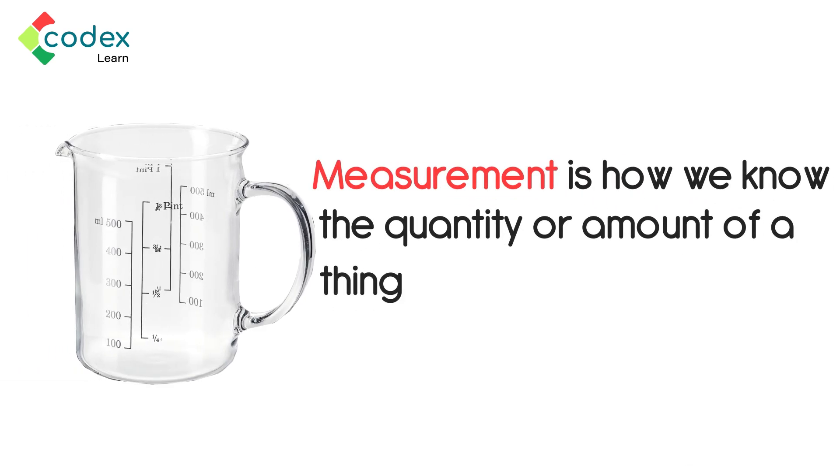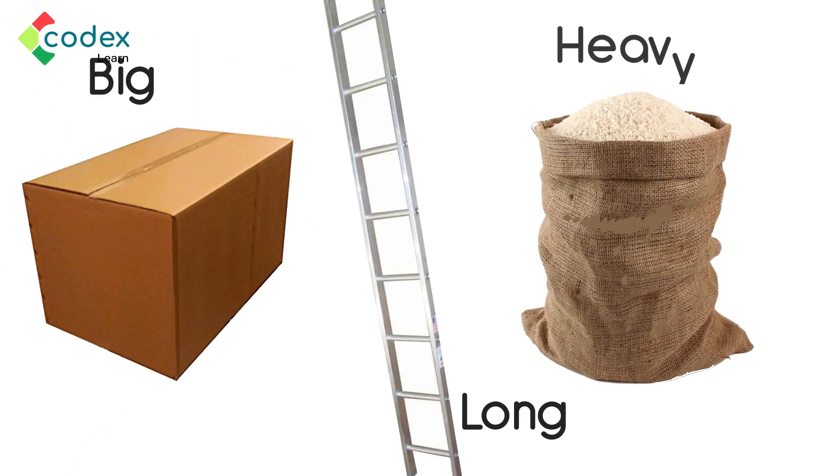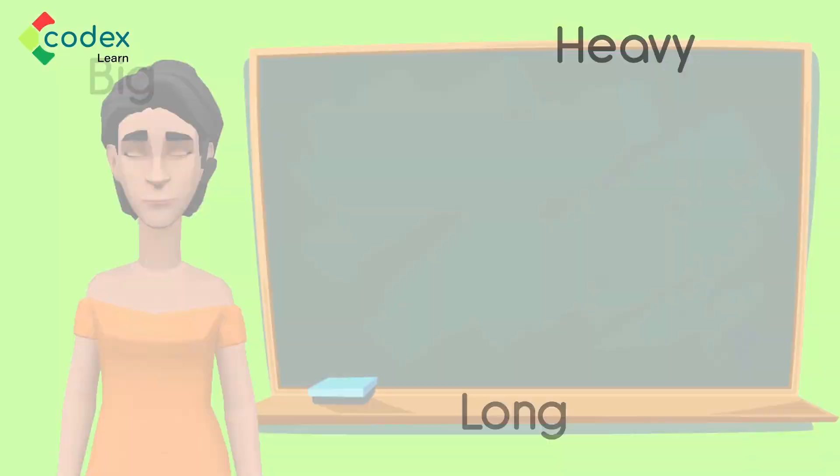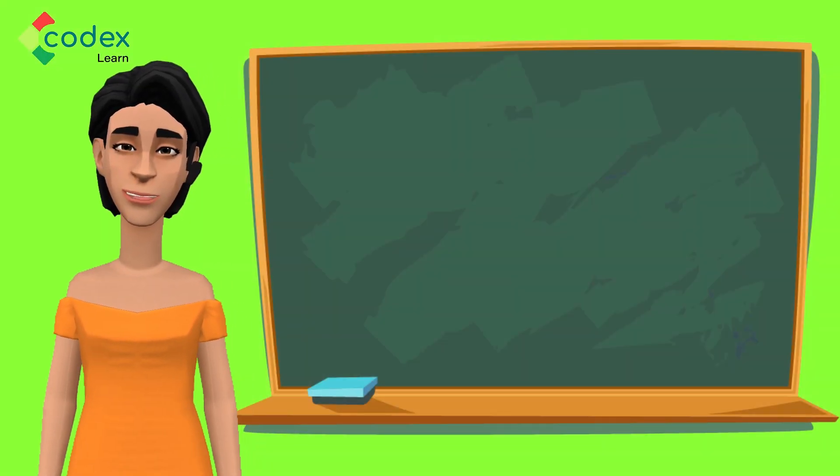Measurement is how we know the quantity or amount of a thing. We measure different things to find out how big, how long, or how heavy we are. By measuring different things, we have a better understanding of what happens around us.